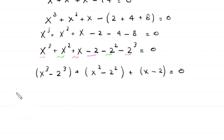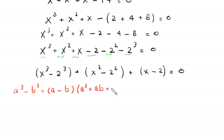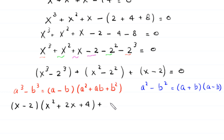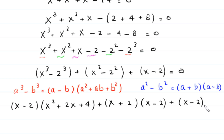By using the algebraic identity a cubed minus b cubed equals a minus b times a squared plus ab plus b squared, the term x cubed minus 2 cubed becomes x minus 2 times x squared plus 2x plus 4. By using the identity a squared minus b squared equals a plus b times a minus b, the term x squared minus 2 squared becomes x plus 2 times x minus 2. Plus the remaining x minus 2, all equal to 0.